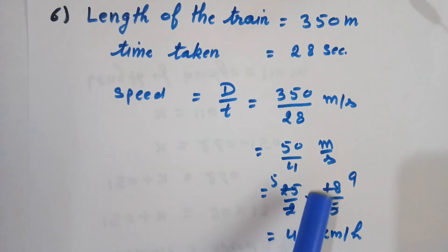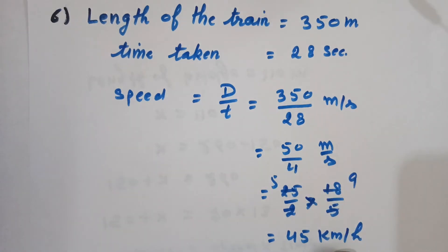Because this is meters per second, we need to convert into kilometers per hour. For conversion we multiply it by 18 by 5.